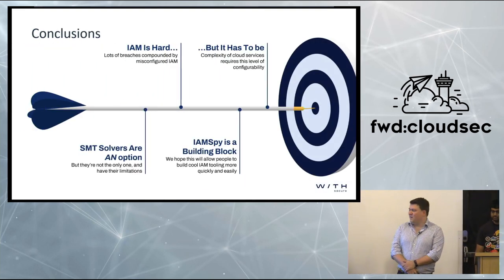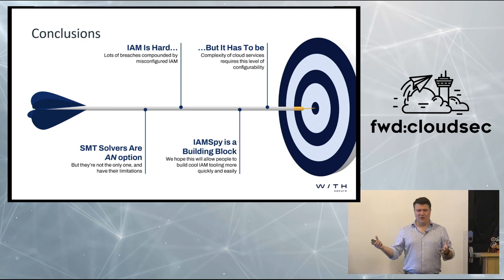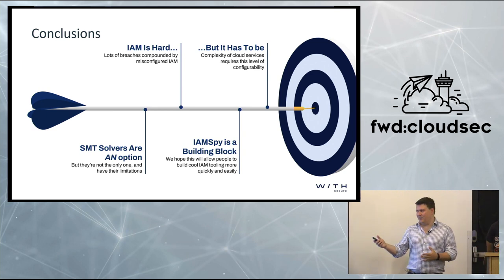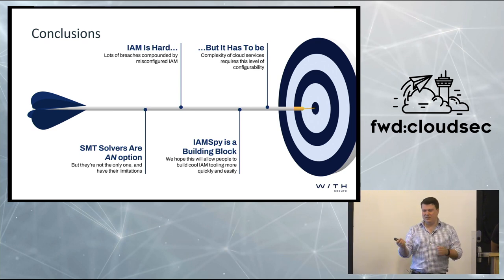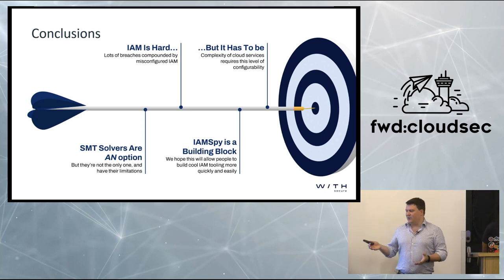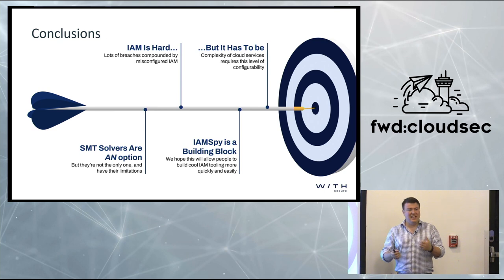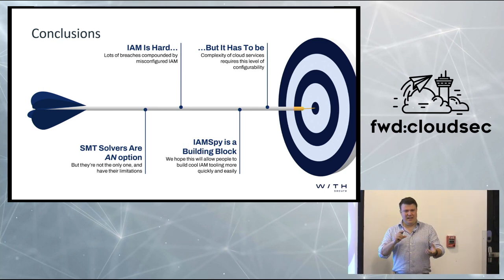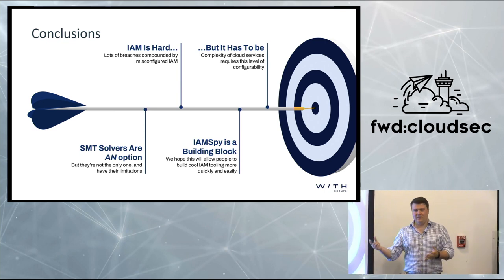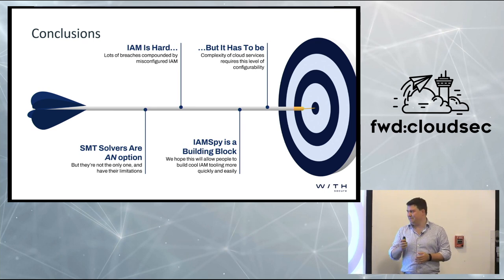Wrapping up: IAM's hard. I don't think that's a surprise, but it does sort of have to be. We quite like SMT solvers for this — they're agnostic of future AWS updates, we don't have to load in new permissions as they get added. But they are an option, not the only one, and there are limitations to this kind of approach. The key thing is it's very useful to be able to get a properly reasoned answer to: is this possible? But just being able to ask that question on one particular resource for one action at a time is not necessarily that useful. So really it's a building block that we intend to open source for it to be used in whatever else people come up with.